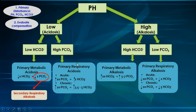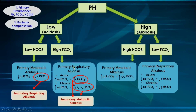For primary respiratory acidosis, compensation is divided into acute (first three days) and chronic (approximately three to five days), occurring primarily through the kidneys and called secondary metabolic alkalosis. If the increase in bicarbonate is too high for the increase in pCO2 — in either acute or chronic compensation — you have a mixed disorder with primary respiratory acidosis and primary metabolic alkalosis. If the increase in bicarbonate is too small, you have a mixed primary respiratory acidosis and primary metabolic acidosis.